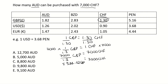So we've now converted into GBP, and we can use that to convert into AUD. We'll say that 1 GBP is equal to — going across to AUD, which is here — 1.82 AUD.